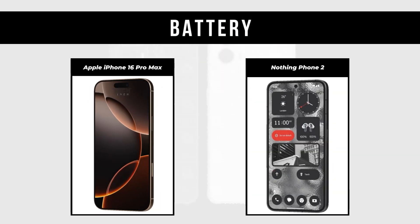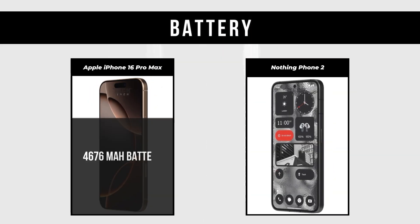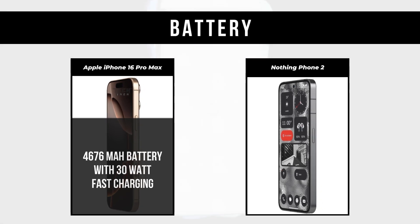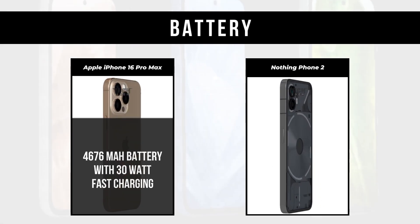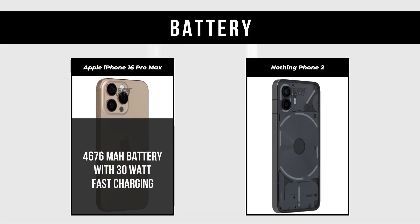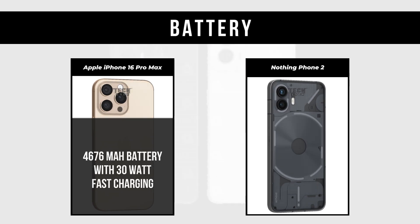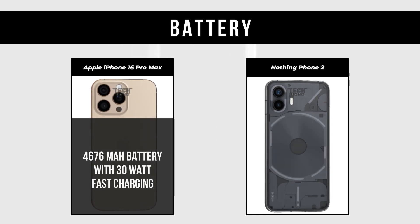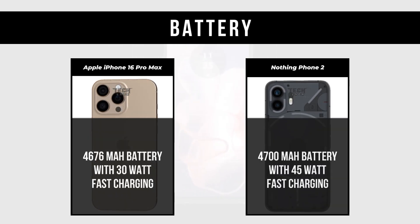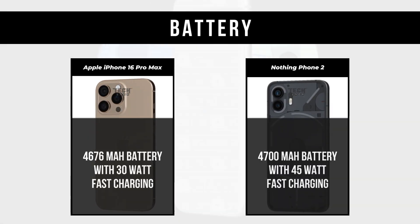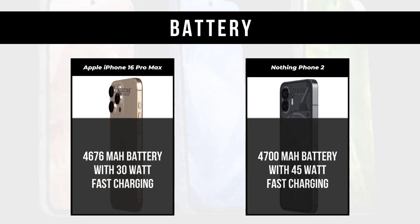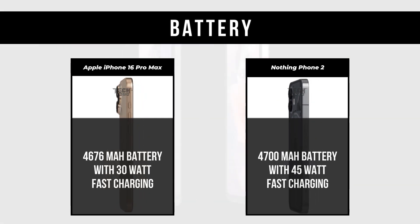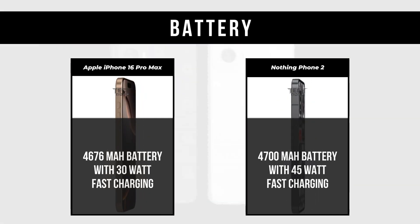Battery: Apple iPhone 16 Pro Max has a 4,676mAh battery with 30W fast charging. Nothing Phone 2 has a 4,700mAh battery with 45W fast charging.